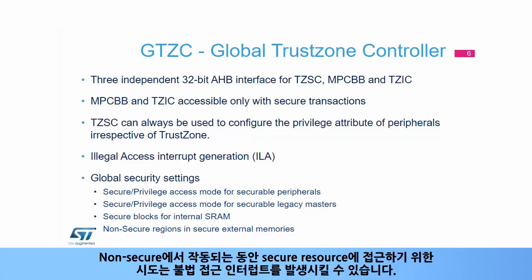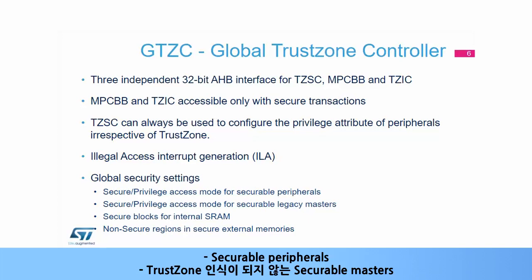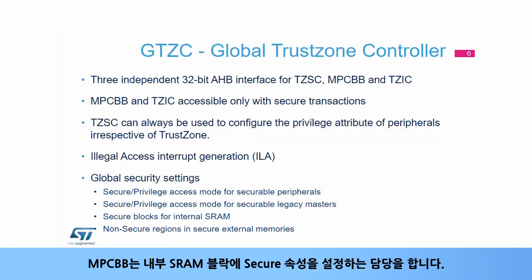Any attempt to access a secure resource while running in non-secure state can cause an illegal access interrupt generation. The TZSC is in charge of setting the secure and privileged attributes to securable peripherals and securable masters that are not TrustZone Aware. The TZSC is also in charge of setting the secure attribute to external memories, while the MPCBB is in charge of setting the secure attribute to internal SRAM blocks.